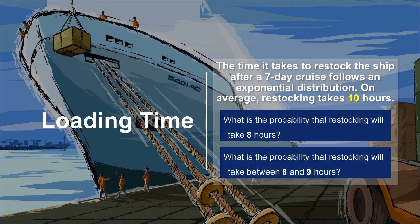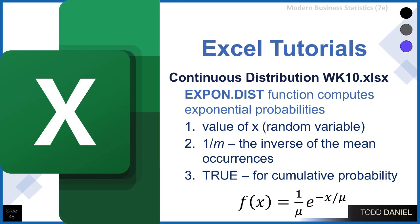The time it takes to restock the ship after a 7-day cruise follows an exponential distribution. On average, restocking takes 10 hours. What is the probability that restocking will take 8 hours? What is the probability that restocking will take between 8 and 9 hours? To answer these questions, I have another spreadsheet that I would encourage you to use — this is the Continuous Distribution Week 10 Excel spreadsheet, and this is where I use the exponential distribution function to answer these questions.